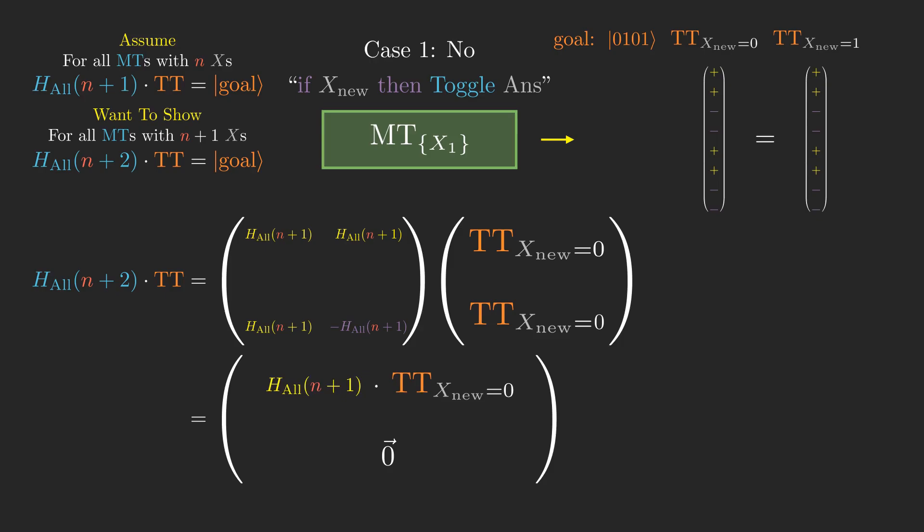We notice that tt x new equals 0 is itself a truth table state for the version of mystery toggles with the same behavior as this one, but operating on the n x's that aren't x new, since x new has no effect on the result of answer. Since we stepped down 1x, we can use the inductive hypothesis.